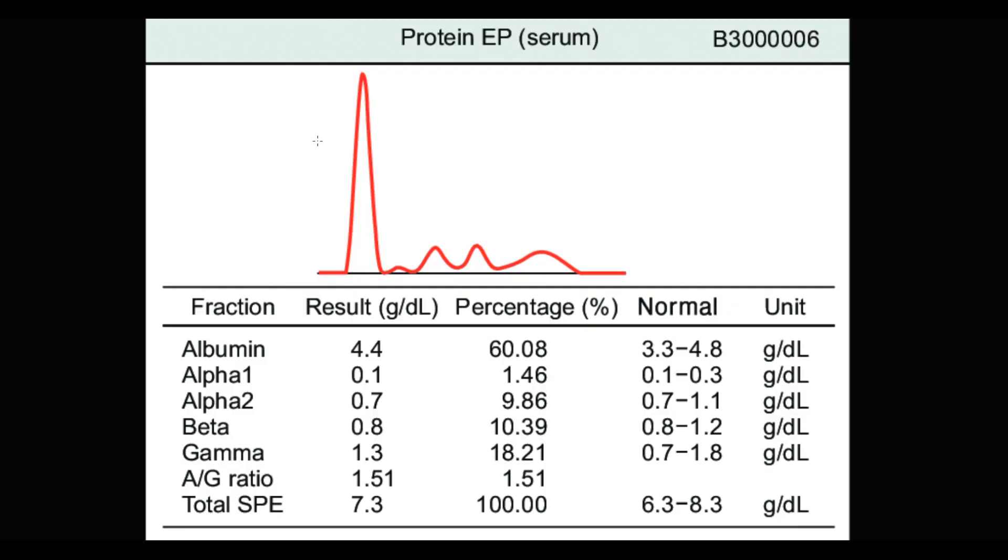Here we see a normal electrophoresis. Albumins are the most common proteins in our blood. So as we see, the albumin peak is by far the largest one.